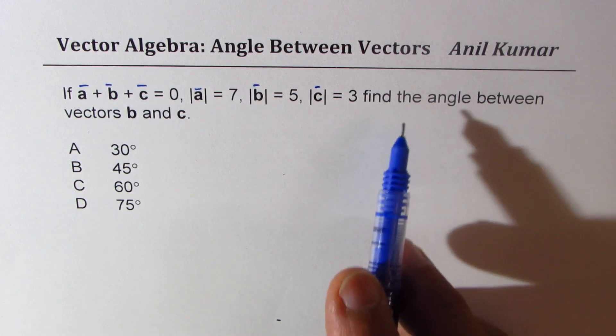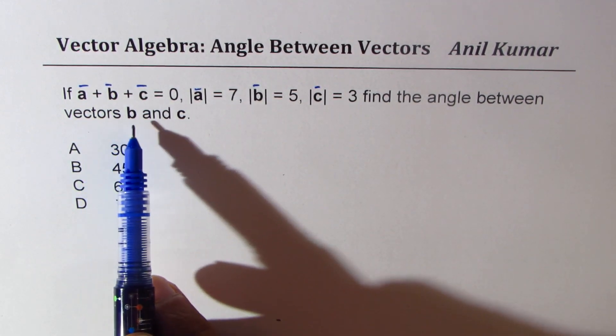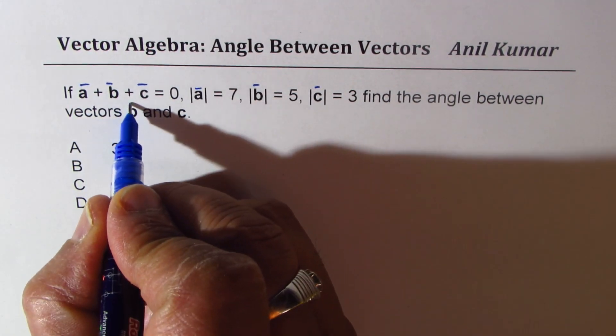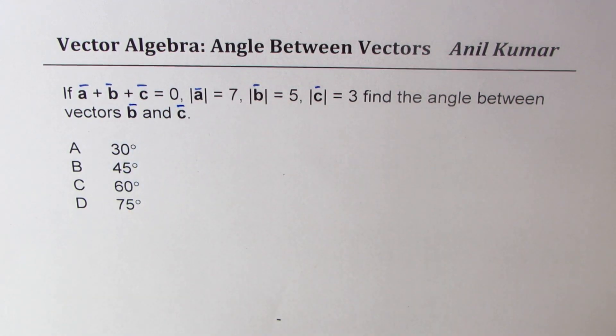So we need to find the angle between two vectors, and we are given three vectors, their magnitudes, and that their sum is zero. The choices are 30 degrees, 45 degrees, 60 degrees, and 75 degrees.